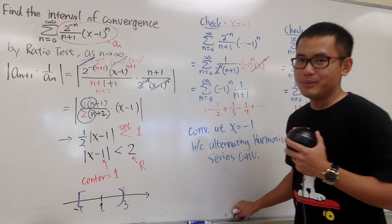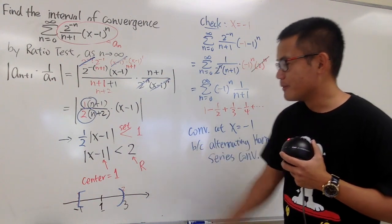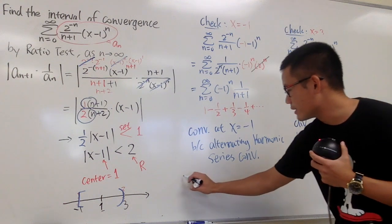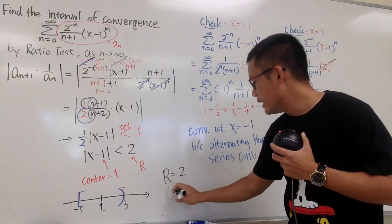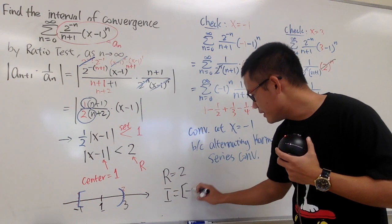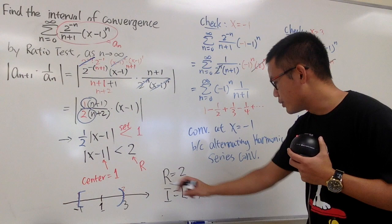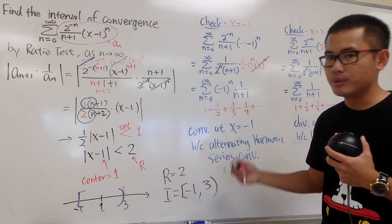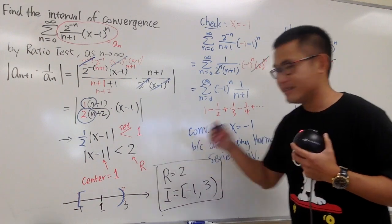So that's pretty much it. The radius of convergence is 2. The interval of convergence is from negative 1, including negative 1, to 3, not including 3 — so the interval is [-1, 3).